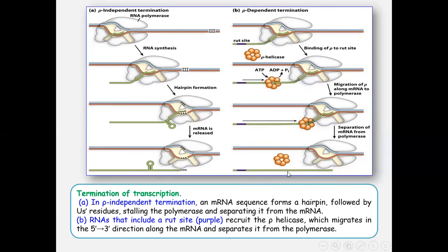Exons are the coding sequences and introns are the non-coding sequences. Introns are removed and exons are joined together, and then the translation process is initiated.